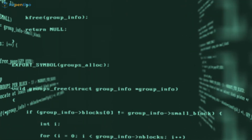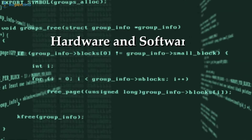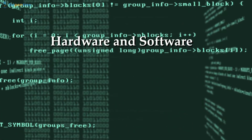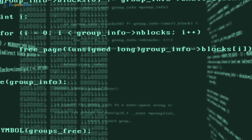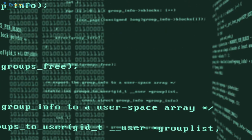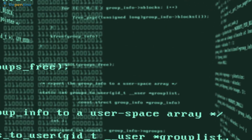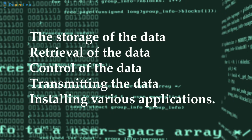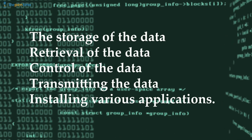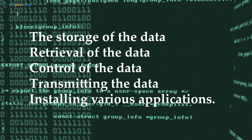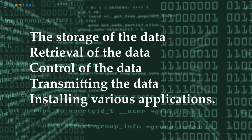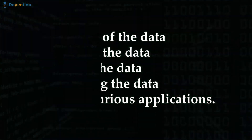So what is information technology? As we all know, a computer system consists of hardware and software. Information technology deals with computer software by doing many automatic operations related to the storage of data, control of data, transmitting data, retrieval of data, and even installing various applications.